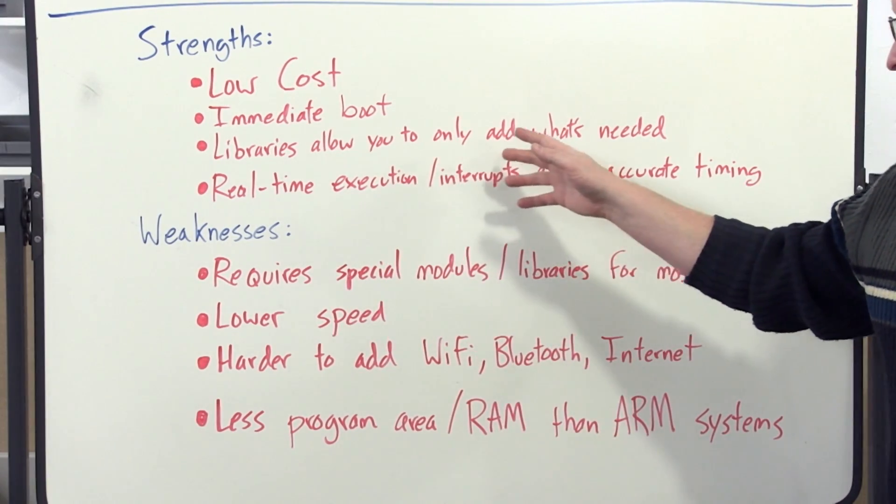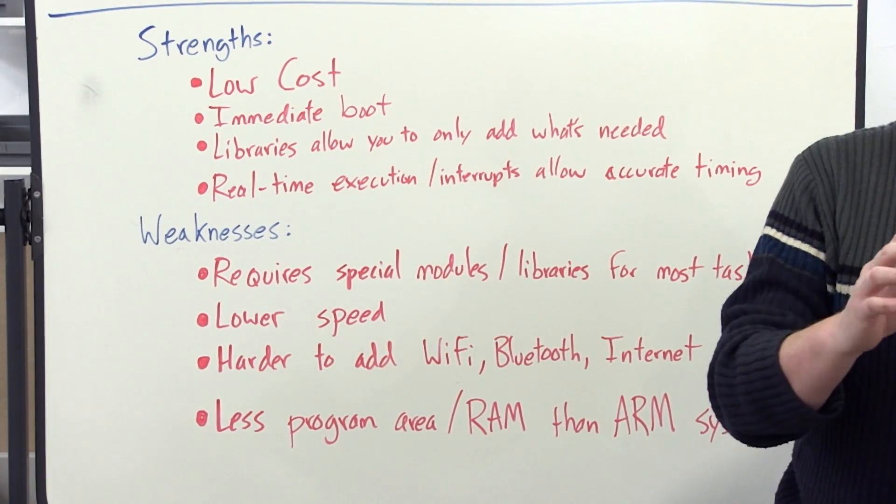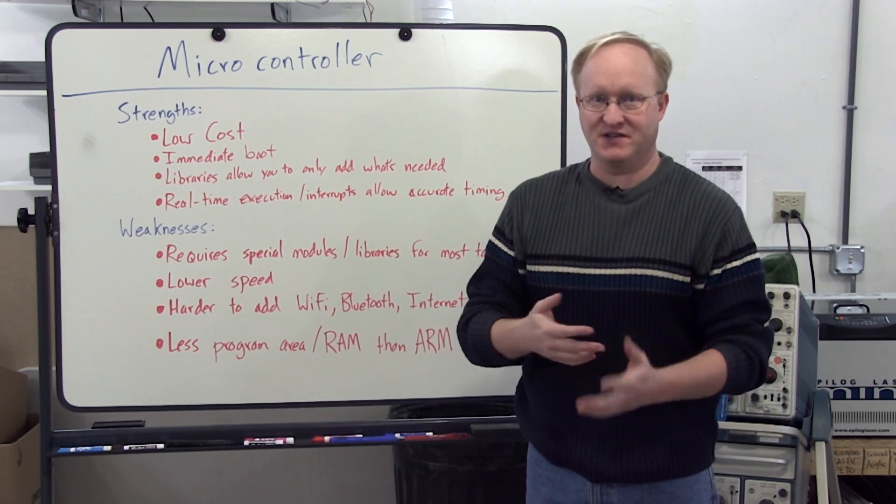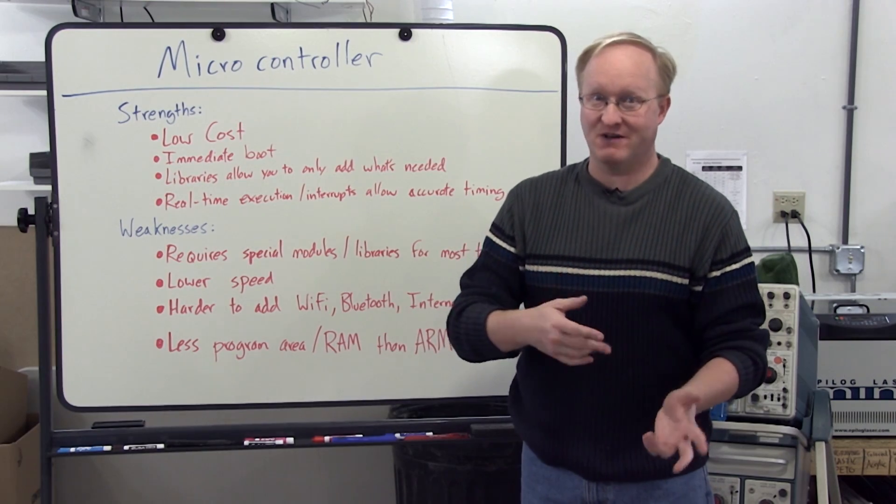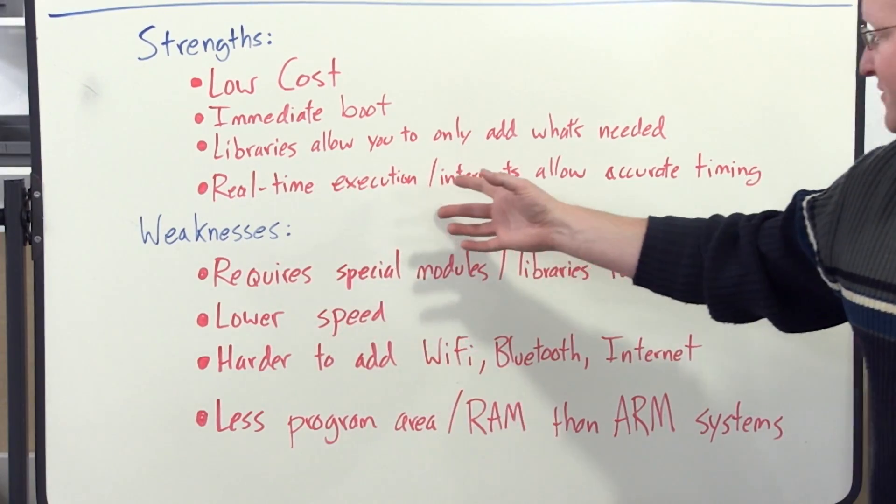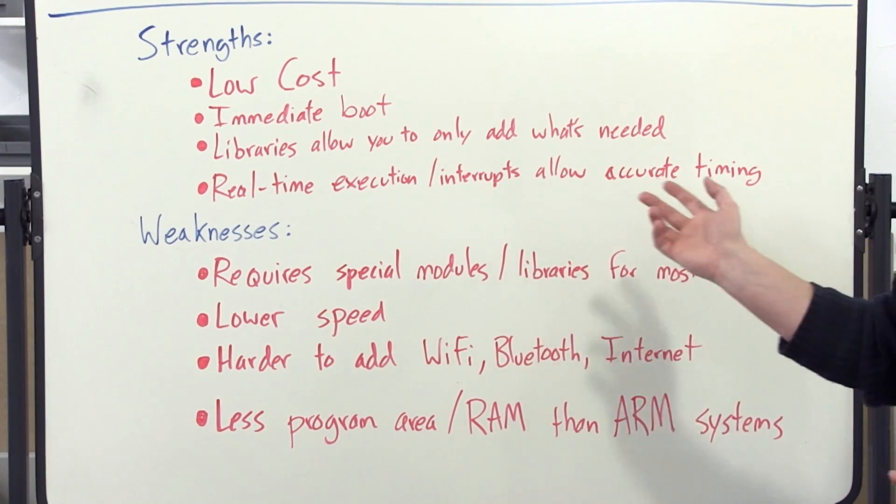Libraries allow you to add only what's needed. So if you need your microcontroller to do, you know, Wi-Fi and Bluetooth, you can just add those things. You know, basically it's code that does it rather than external hardware, which is nice.